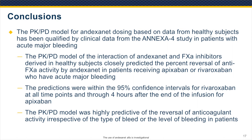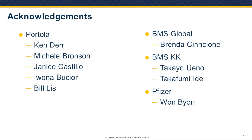In conclusion, the PKPD model for andexanet dosing based on healthy subjects has been verified by clinical data in the Annexa-4 study in patients with acute major bleeding. The PKPD model of the interaction between andexanet and the factor Xa inhibitors closely predicted the anti-factor Xa activity reversal for both apixaban and rivaroxaban in patients with acute major bleeding. It is highly predictive of the level of reversal of anticoagulant activity, irrespective of the type of bleed and the level of bleeding in patients. We'd like to thank those who helped in many of the developments of this model. Thank you for your attention.